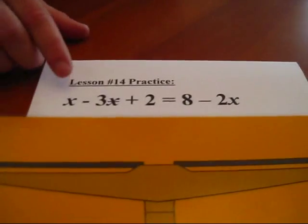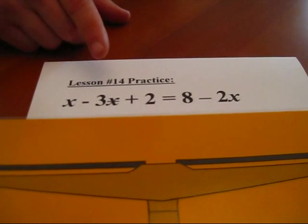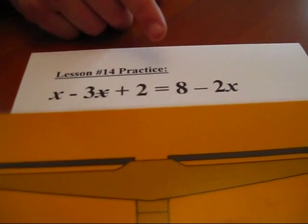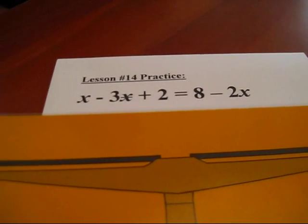Okay, Eliezer, let's look at this problem. Would you read the problem, please? Sure. x take away 3 star plus 2 equals 8 take away 2x. Yes, now how would you proceed to do this?